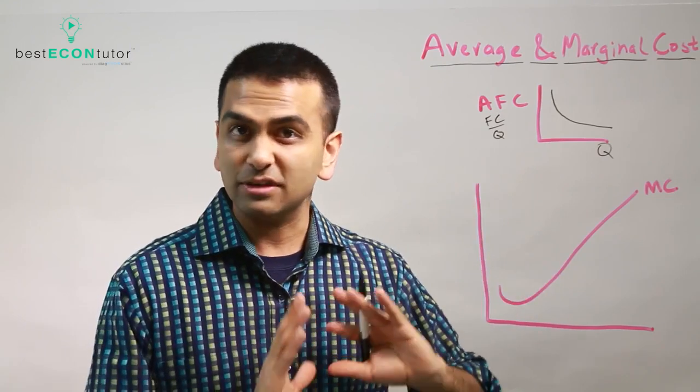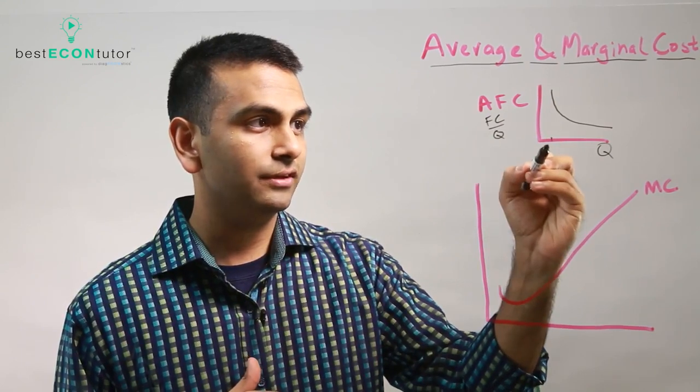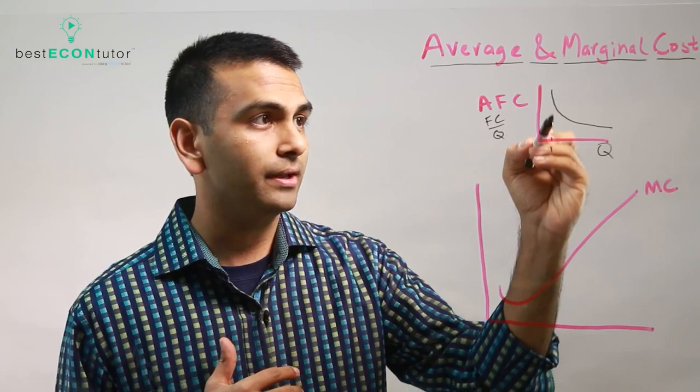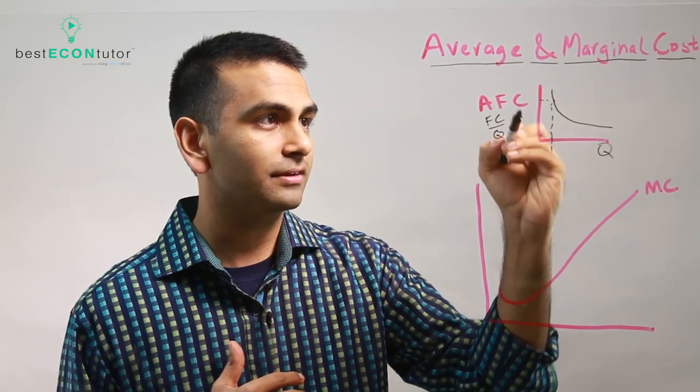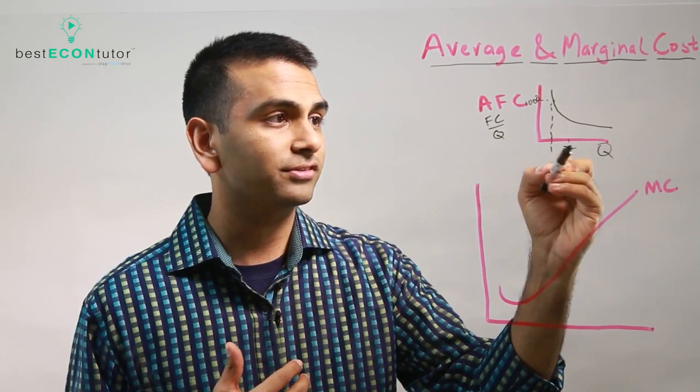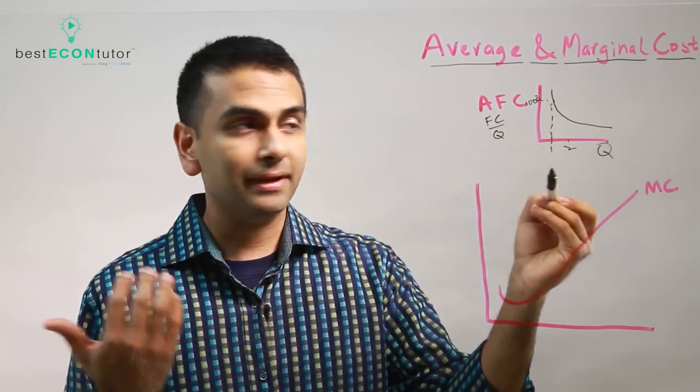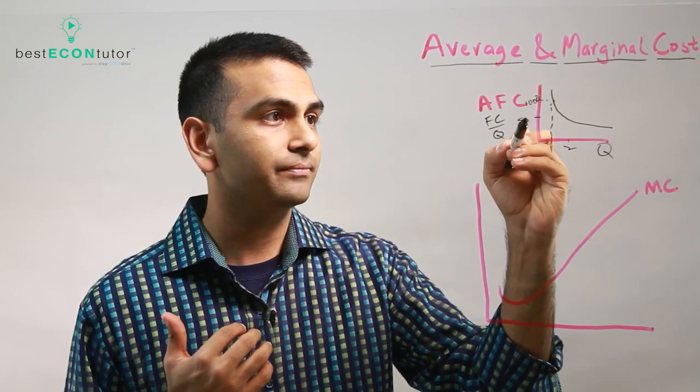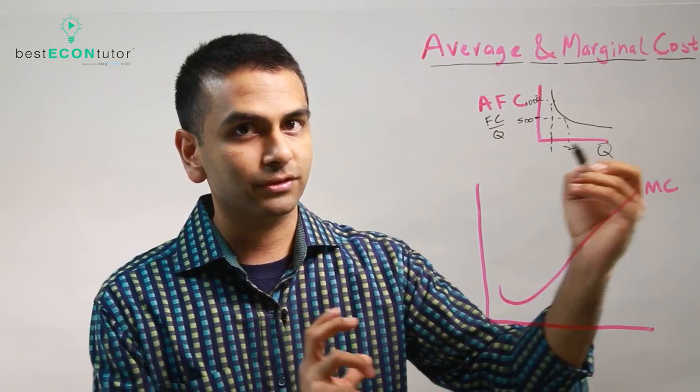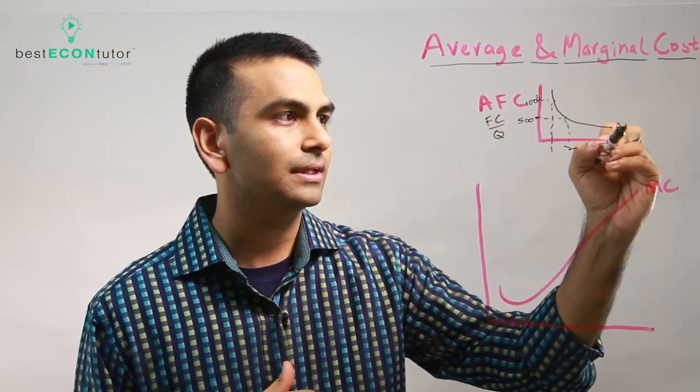Then, in that case, what is your AFC if you were to just make one fork? Well, then, $1,000 over one, that's $1,000 average fixed cost. But if you were to now just make two forks, well, it's still $1,000, still the same numerator, but now divided by two. So now the average is only $500. And so on. As you increase your Q, meaning moving to the right, that's a lower AFC. So that's why AFC keeps dropping.